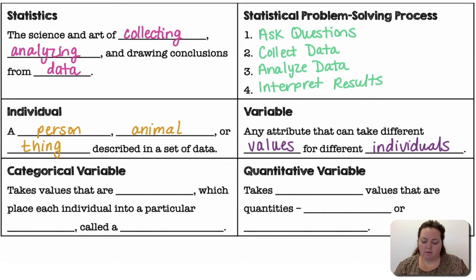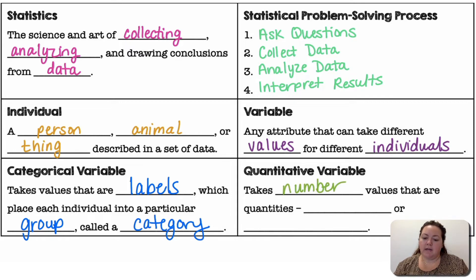Categorical variables take on values that are labels which place each individual into a particular group called a category. Quantitative variables take number values that are quantities, so they are counts or numerical values. For a quantitative variable, it would make sense to calculate the average. So if it makes sense to take the average of those numbers, then it is a quantitative variable.